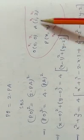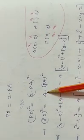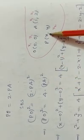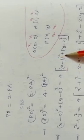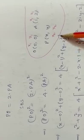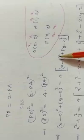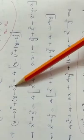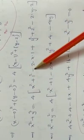PA squared equals x minus 1 whole square plus y minus 2 whole square. So we have x squared plus y squared equal to 4 into x minus 1 whole square plus y minus 2 whole square. Applying the formula (a minus b) squared = a squared plus b squared minus 2ab: x minus 1 whole square gives x squared plus 1 minus 2x, and y minus 2 whole square gives y squared plus 4 minus 4y.